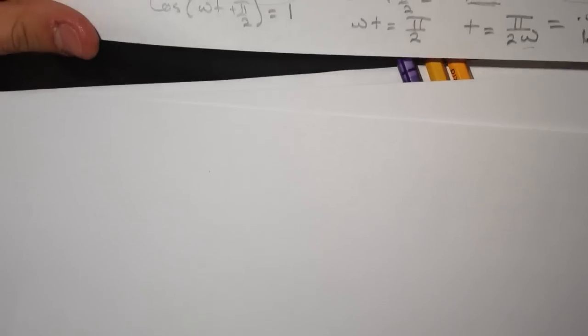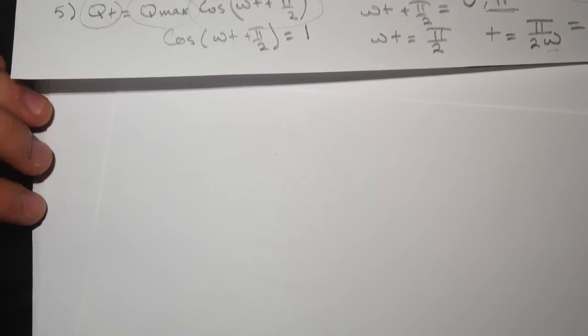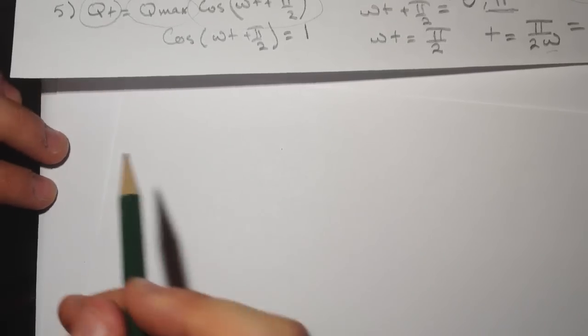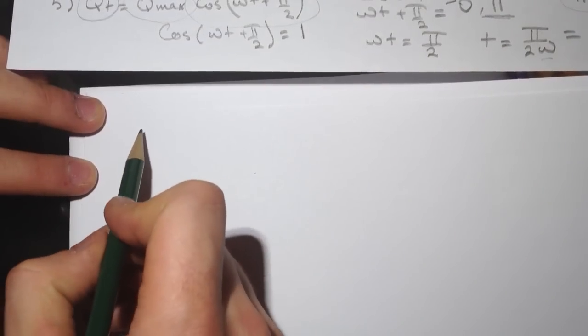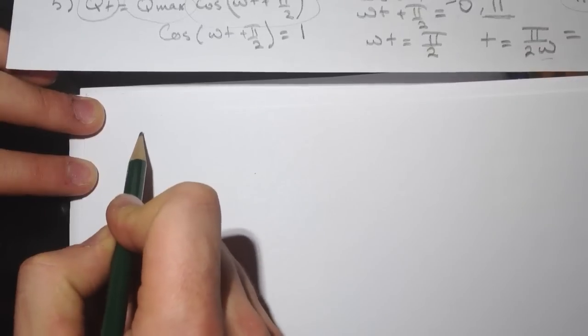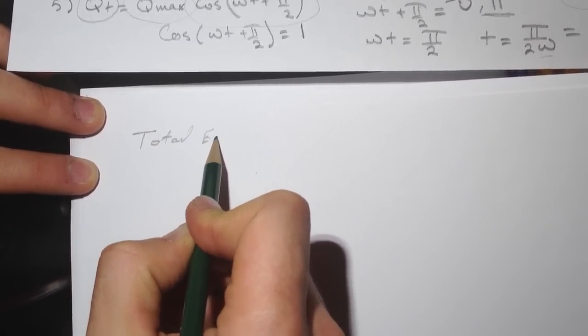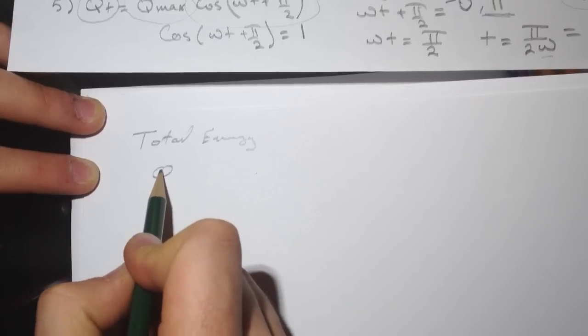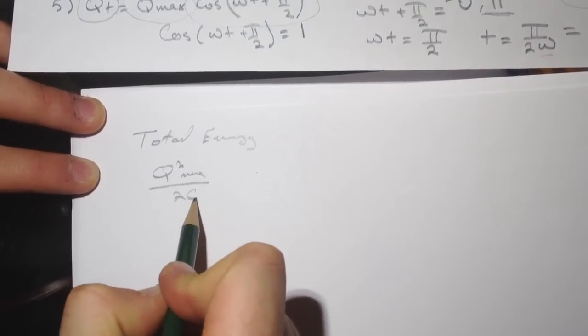The last question, they're asking what is the total energy stored in the inductor plus the capacitor. You can just do that by knowing that the total energy can be found like—total energy can be Q squared max over 2C.